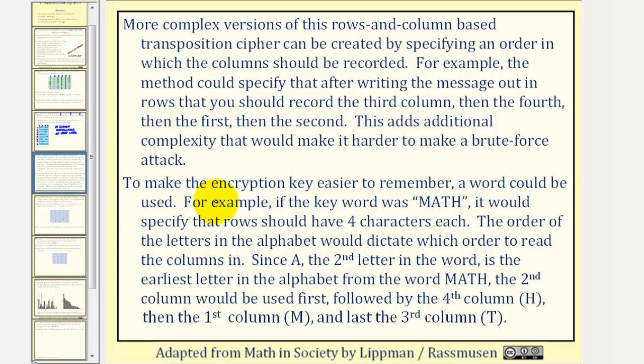To make the encryption key easier to remember, a word could be used. For example, if the key word was math, it would specify that rows should have four characters each because there's four letters in the word. The order of the letters in the alphabet would dictate which order to read the columns in.